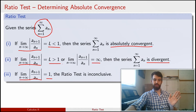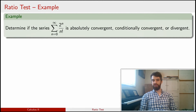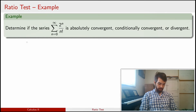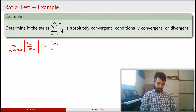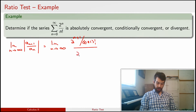Let's see how this works with a specific example: the sum of 2^n over n factorial. One advantage of the ratio test is that it handles n factorial nicely — we wouldn't want to use an integral test here since x factorial isn't well-defined in general. By the ratio test, we compute the limit as n goes to infinity of the absolute value of a_{n+1} over a_n, which gives us the limit of [2^{n+1} / (n+1)!] divided by [2^n / n!].